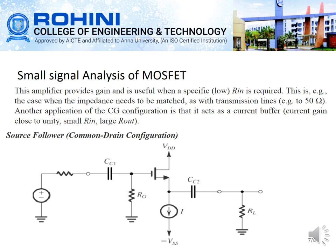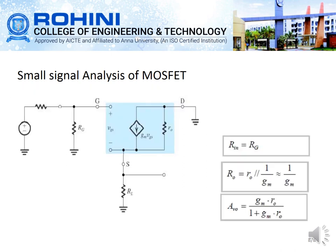The common gate configuration has small input resistance and large output resistance. Next is the common drain configuration, where the drain is grounded and the output is taken at the source terminal. There is a coupling capacitor on the input side, another on the output side, and a bypass capacitor. In the small signal analysis, the output is at the source, the input is at the gate, and the drain is grounded. Input resistance Rin equals RG, output resistance R0 equals R0 parallel (1/GM), which simplifies to 1/GM, and voltage gain AV equals GM × R0 divided by (1 + GM × R0).